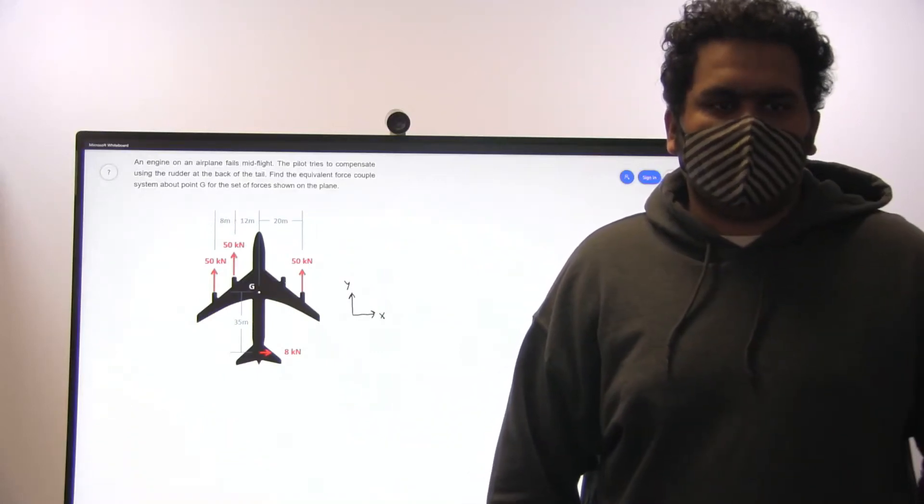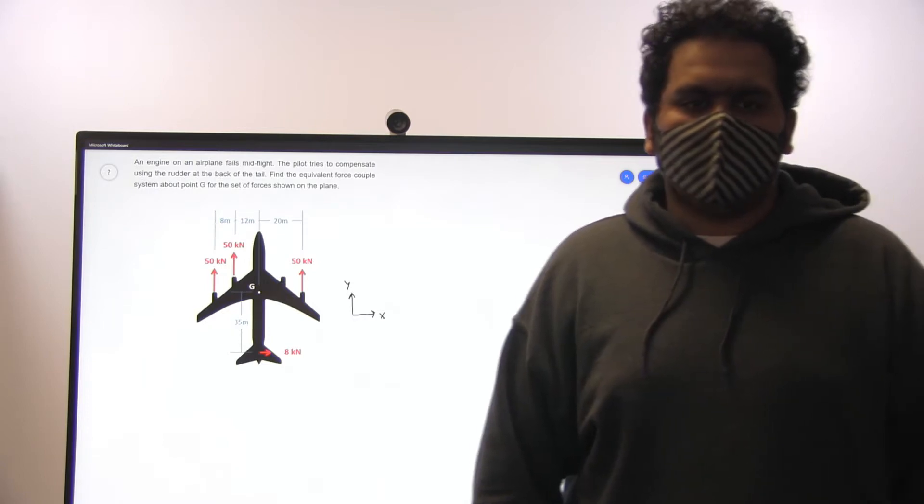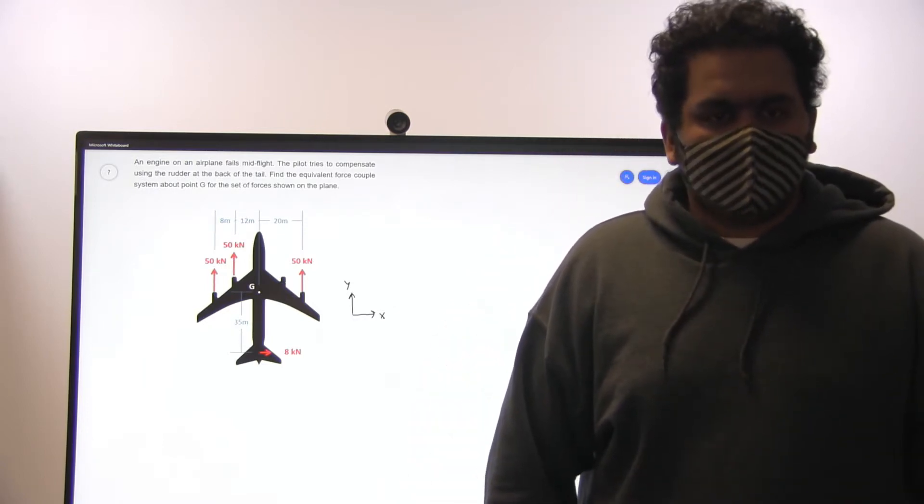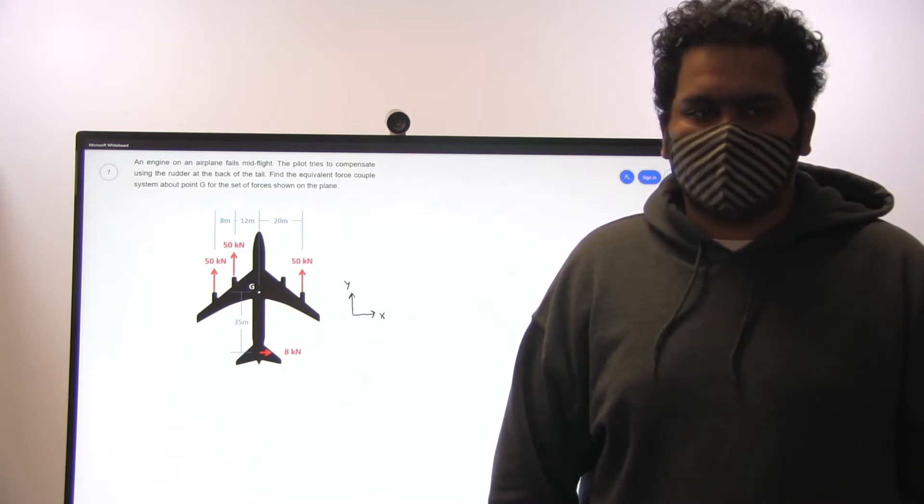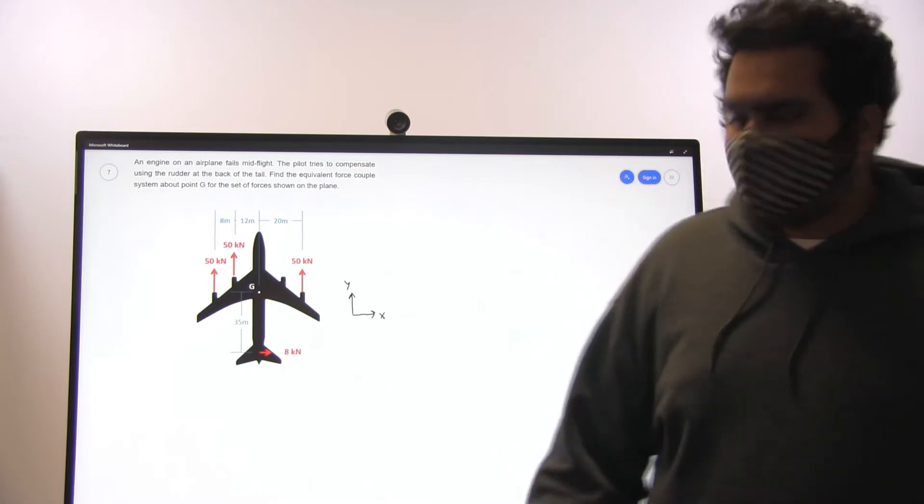The problem states that an engine on an airplane fails mid-flight. The pilot tries to compensate using the rudder at the back of the tail. Find the equivalent force-couple system about point G, which is the center of mass on the plane.